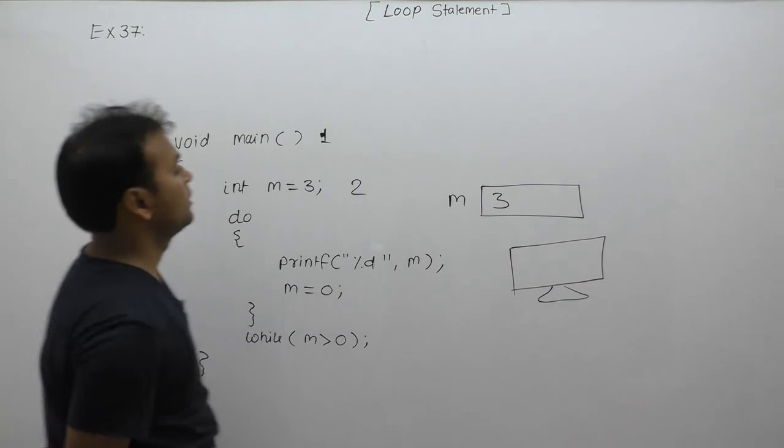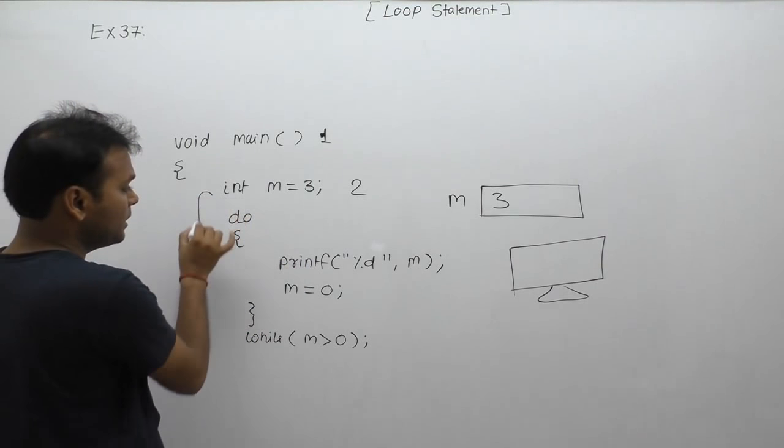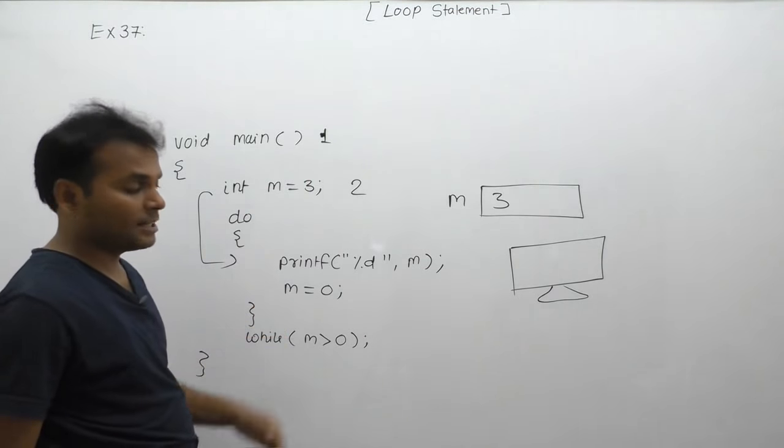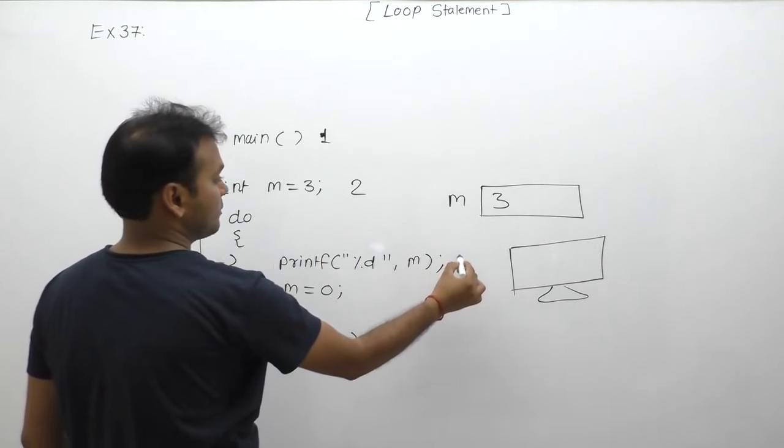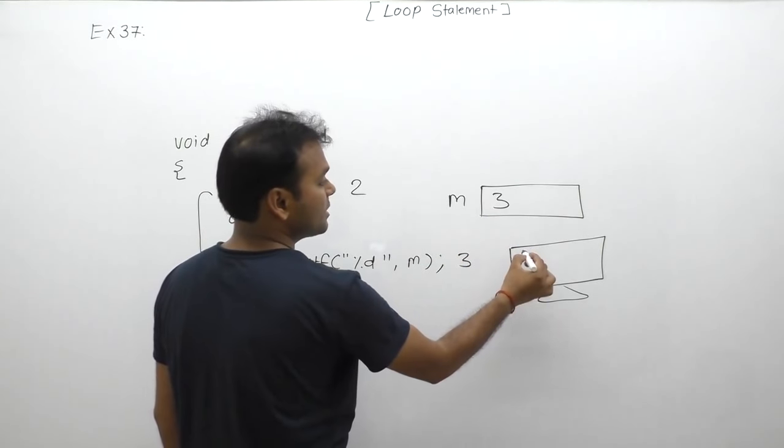Next sequence: control directly goes inside the body of do-while without testing any conditions. Then third sequence: display value of m. m is already 3, so the output message is 3.